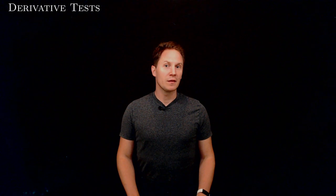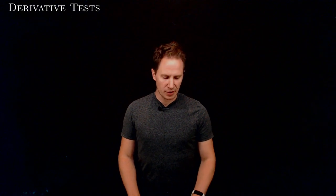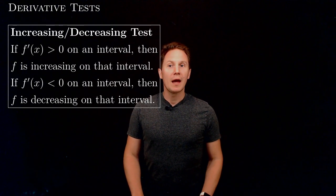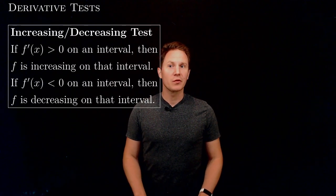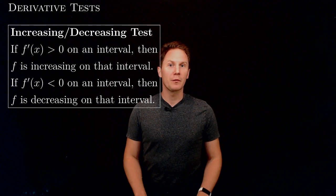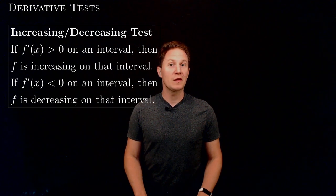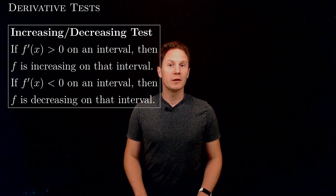Let's see what the first and second derivatives can tell us about a function. We have an increasing-decreasing test that tells us that if the first derivative of a function is positive on an interval, then the values of the function must increase on that interval, whereas if the first derivative is negative on an interval, then the values of the function must decrease on that interval.